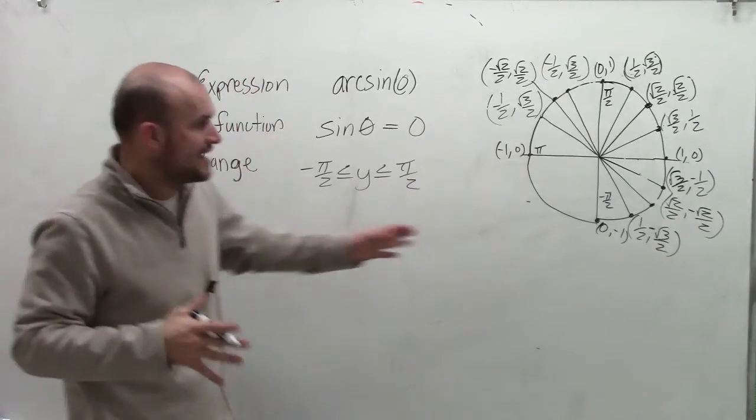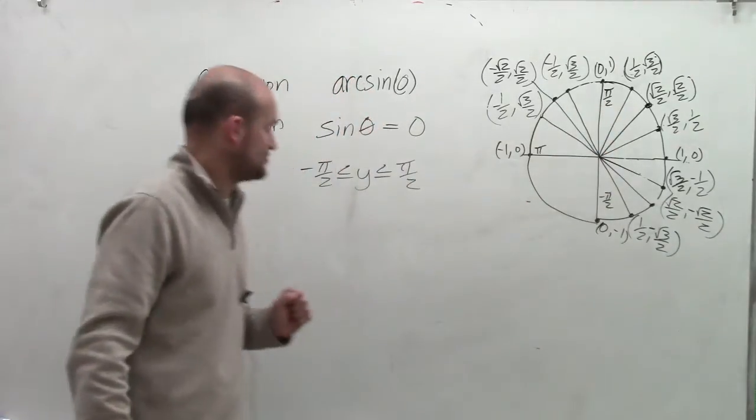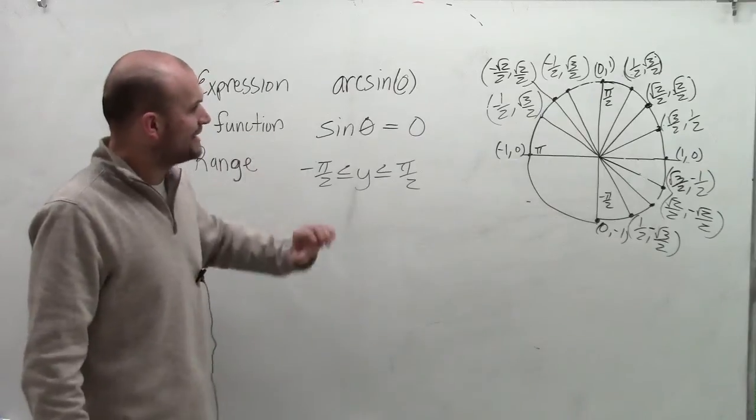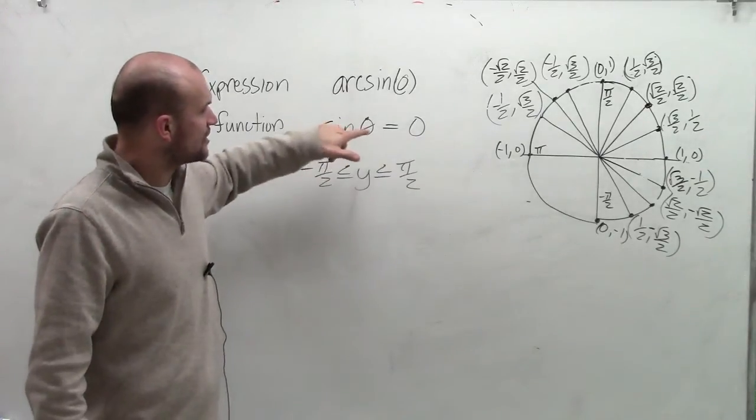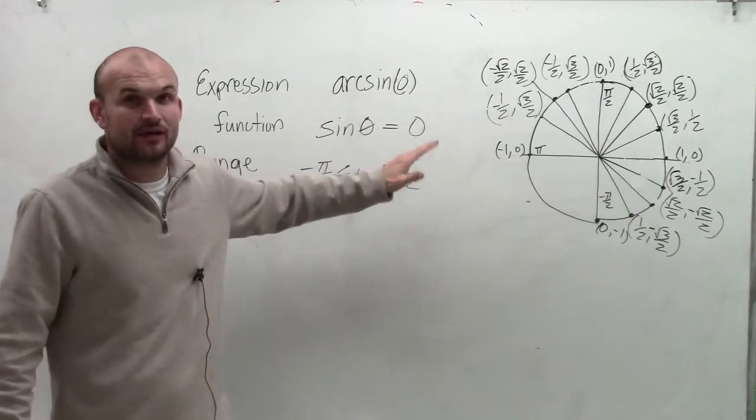That means our angle has to fall within the fourth or the first quadrant. I need to find what angle is going to provide a sine value of 0.